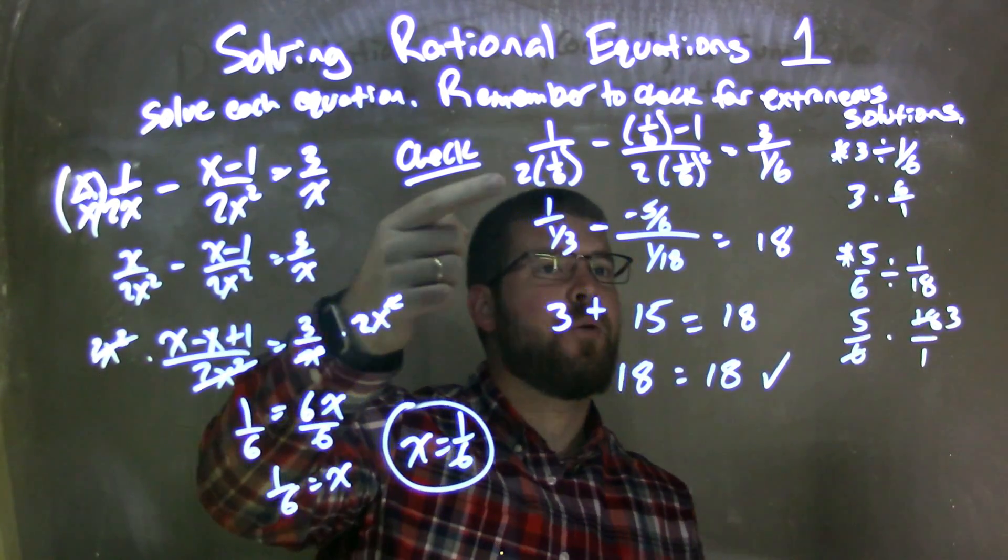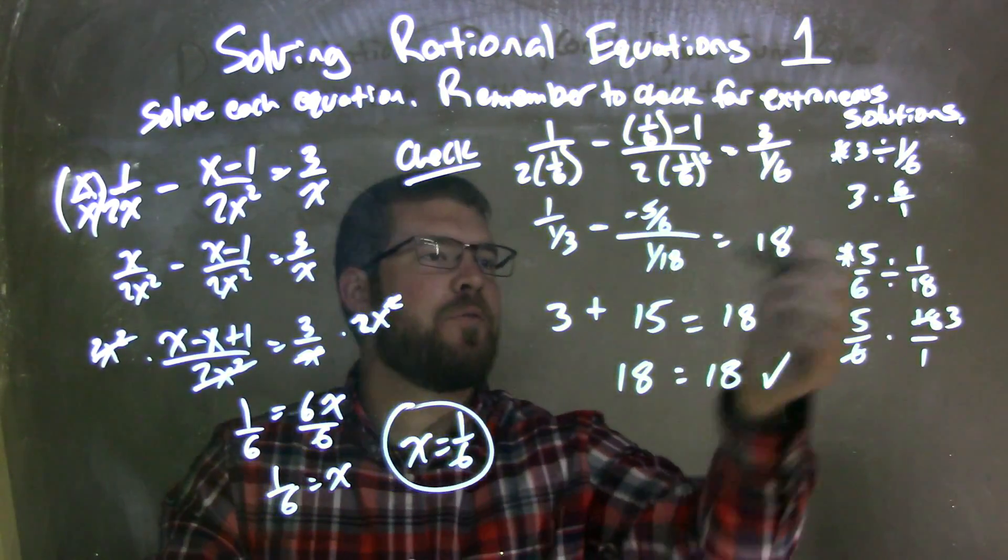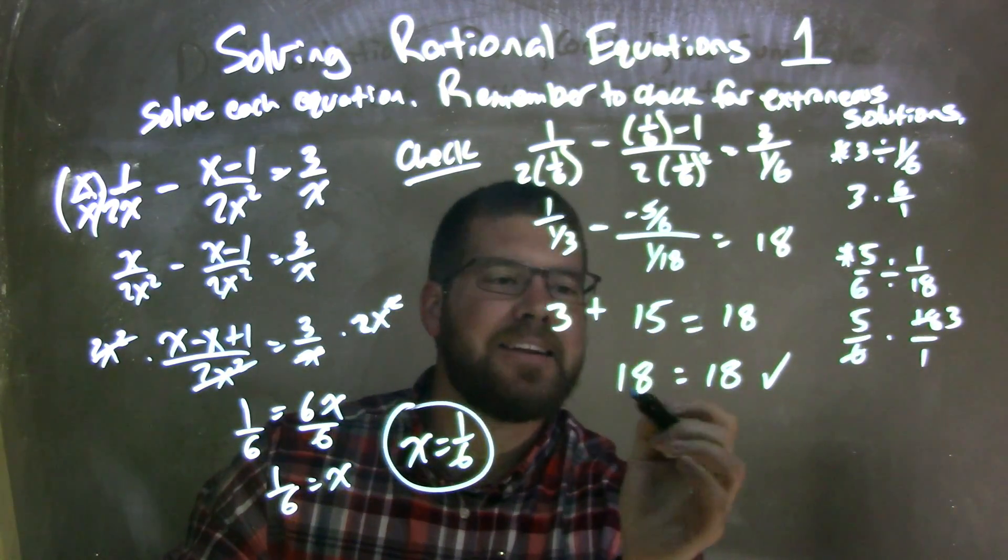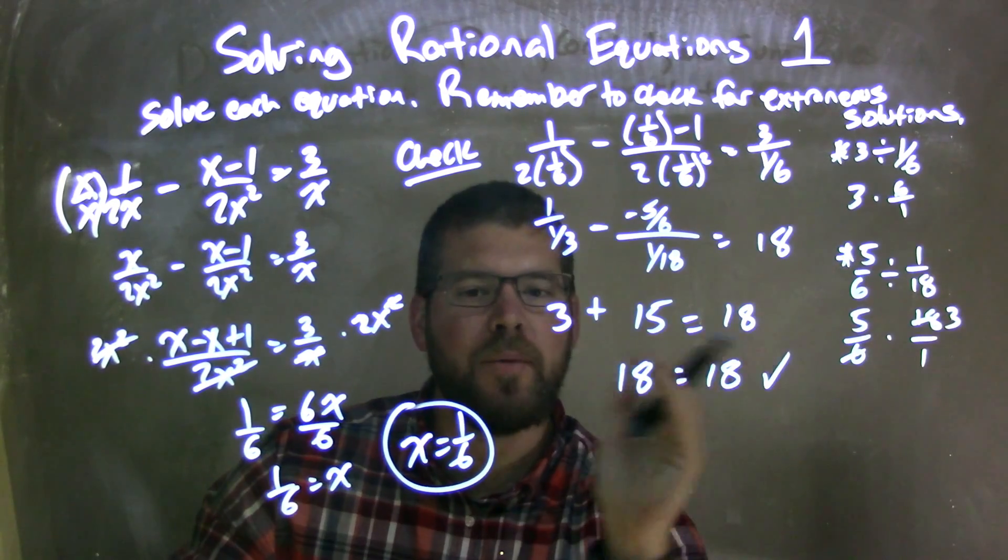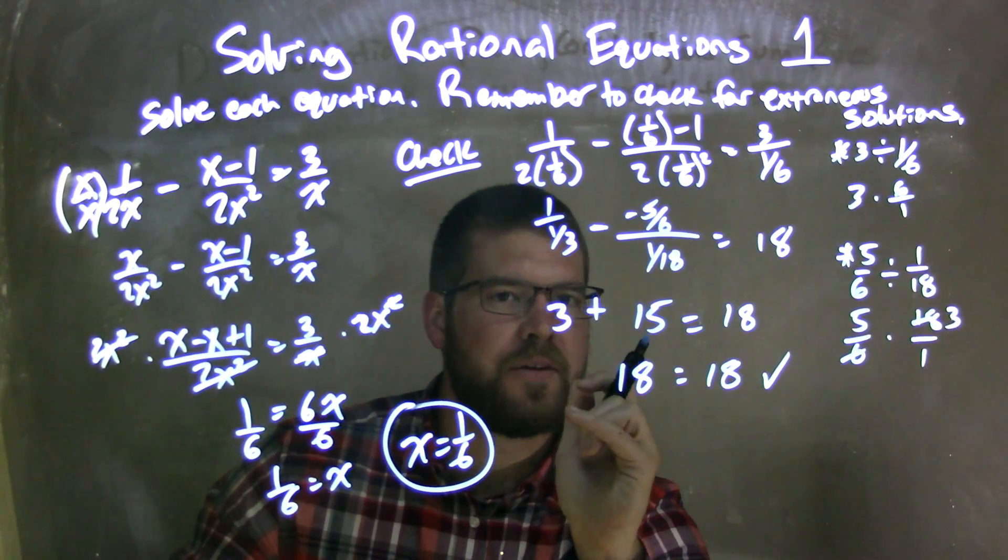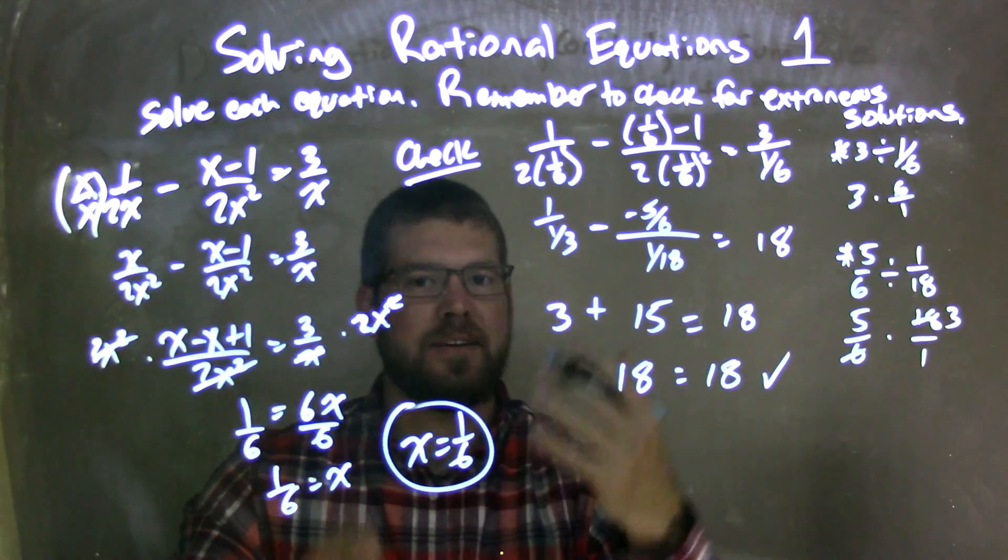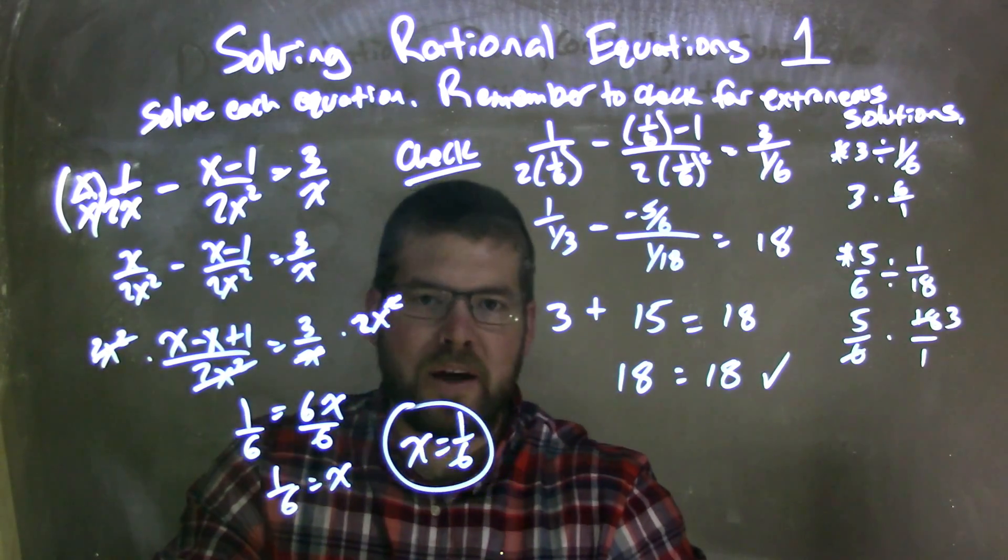I had to check that, so I plugged 1 sixth into my equation and simplified. After doing some fancy fraction work, I got 18 equal to 18. My left and right hand side were equal. Fantastic. Confirming that 1 sixth is not an extraneous solution, but my final answer, which is x equals 1 sixth.